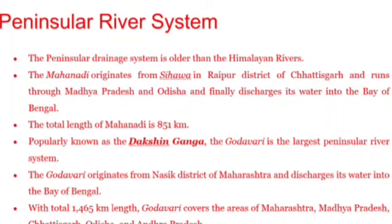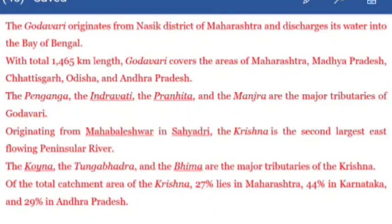Godavari originates from Nasik district of Maharashtra and discharges its water into the Bay of Bengal. Its length is 1,465 kilometers. The Godavari covers the areas of Maharashtra, Andhra Pradesh, Chhattisgarh, Odisha, and Telangana. The major tributaries of Godavari are Penganga, Indravati, Pranahita, and Manjira.